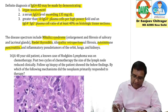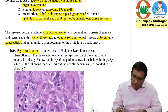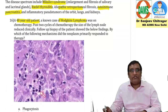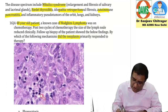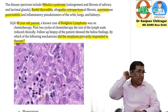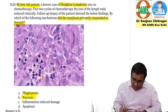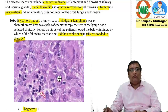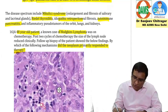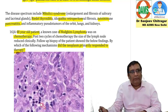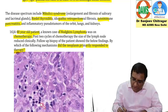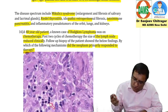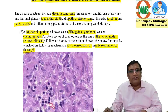Next question: a 48-year-old patient, known case of Hodgkin lymphoma. The question asks which mechanism did the neoplasm primarily respond to therapy? Options: phagocytosis, necrosis, inflammation-induced damage, apoptosis. Patient had Hodgkin lymphoma and was put on ABVD chemotherapy. After two cycles, the size of the lymph node reduced. Follow-up biopsy was done.